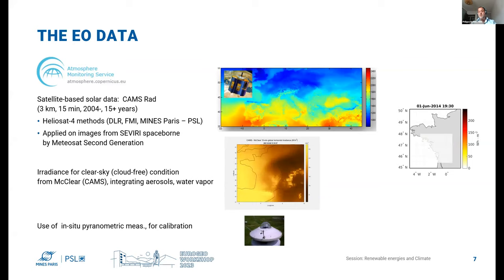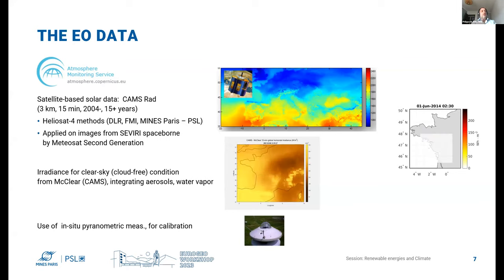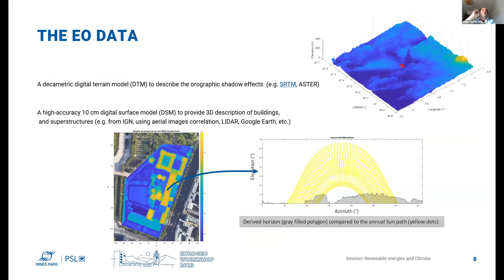In-situ pyrheliometric measurements can be used for calibrating long-term satellite data series where available. Digital elevation models such as SRTM are also used, as well as digital surface models provided by airborne systems with orthophoto imagery or lidar data.